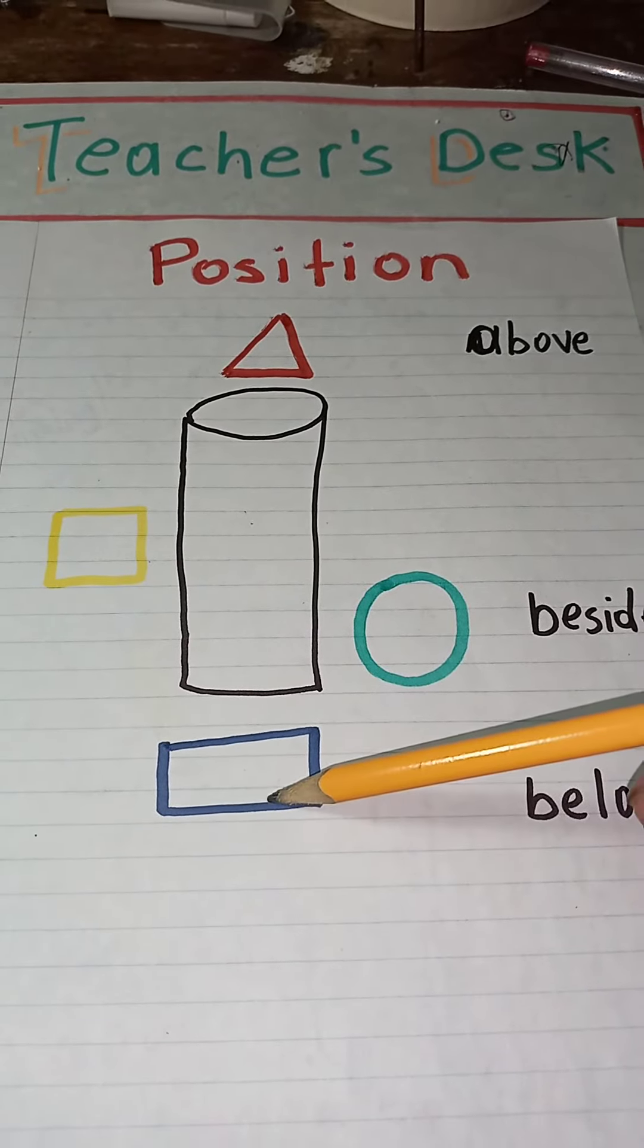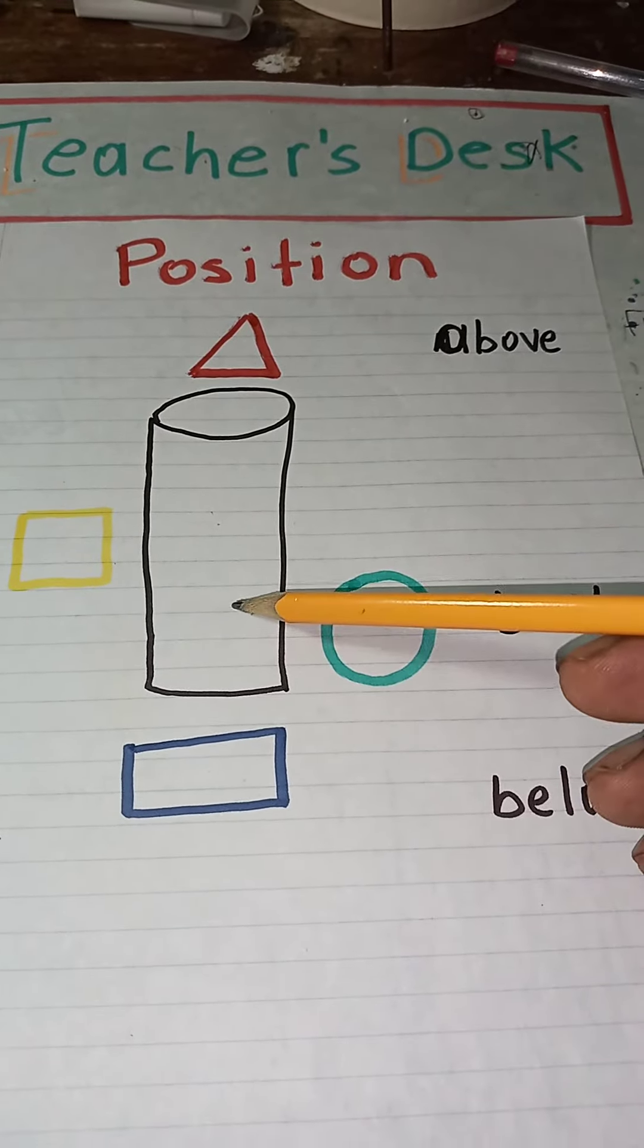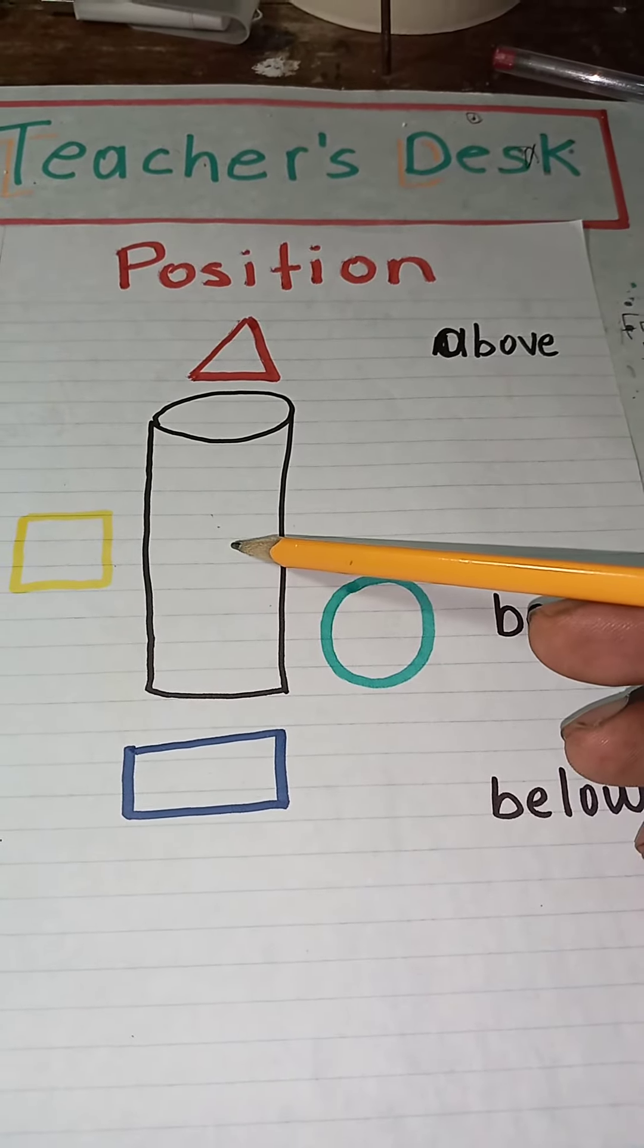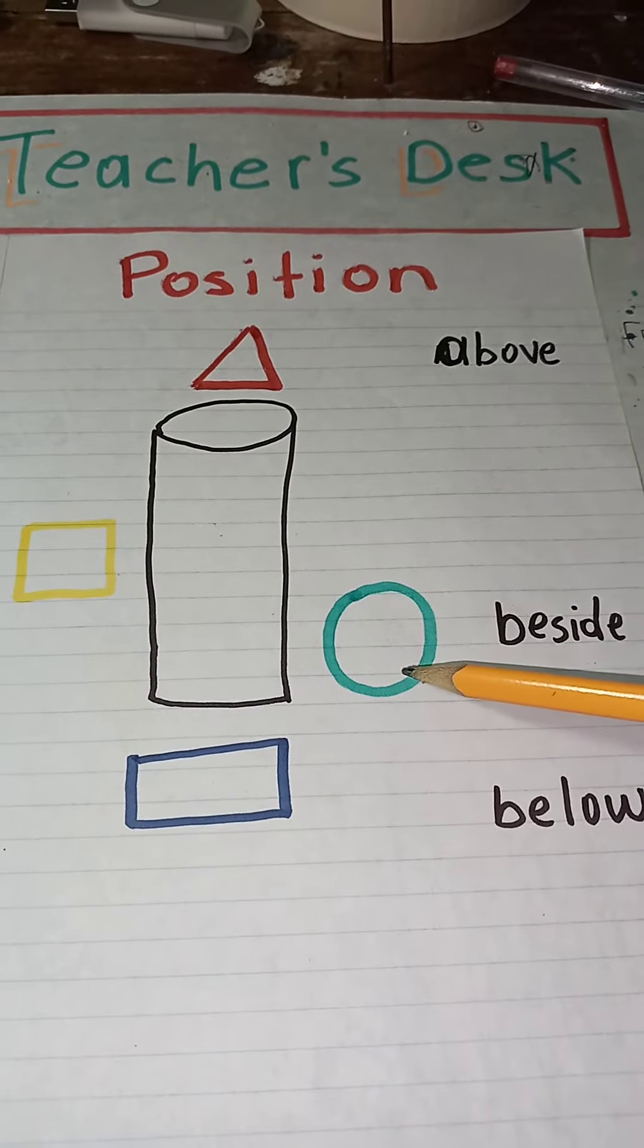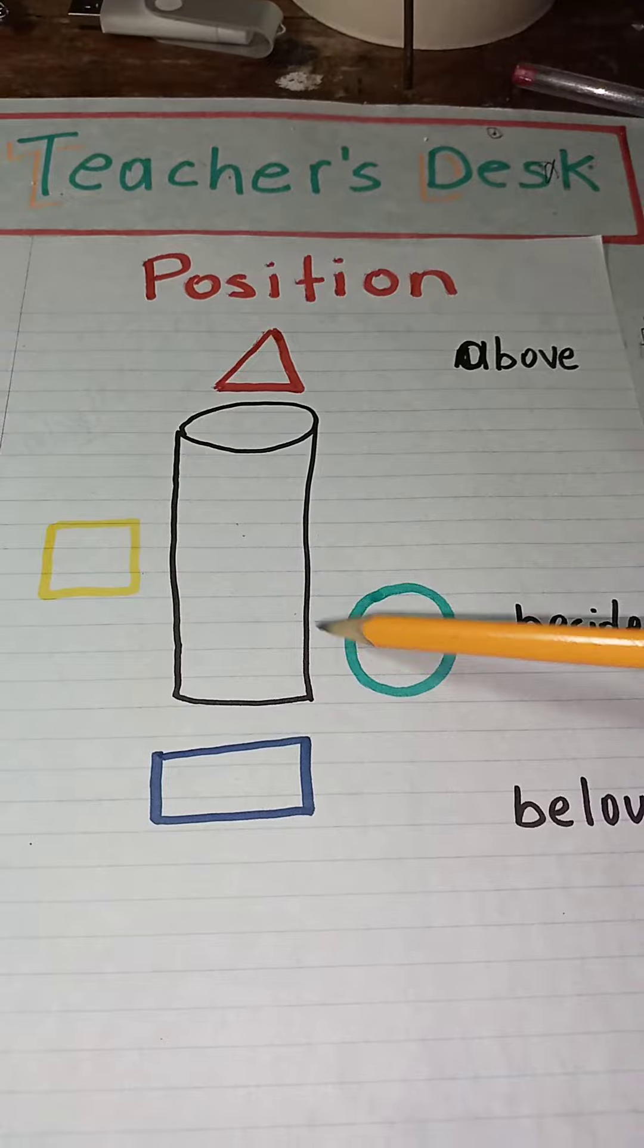Where is the rectangle? The rectangle is below the object, the glass. And where is the circle or the square? They are beside it.